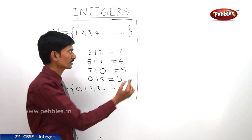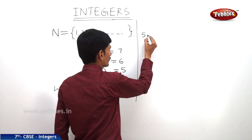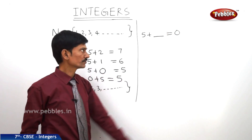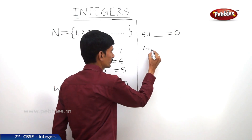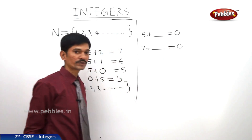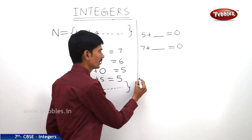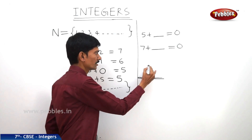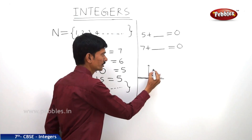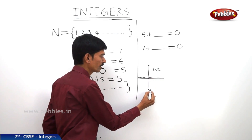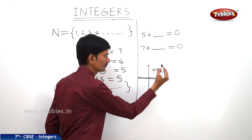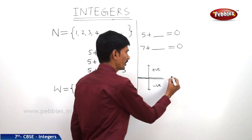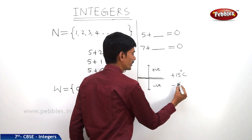Are these numbers sufficient? For example, what should be added to 5 to get the sum 0? And what should be added to 7 to get the sum 0? Sometimes we need measurements like above and below sea level — height above sea level is represented by a positive sign, and below sea level by a negative sign. Even temperature is measured with positive and negative values, like plus 15 degrees centigrade and minus 15 degrees centigrade.